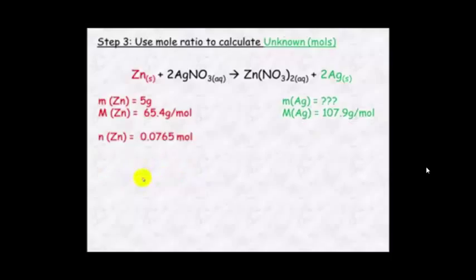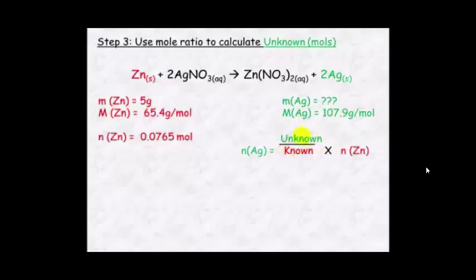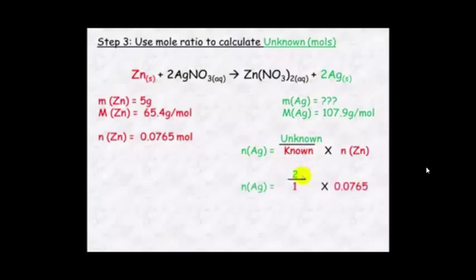Now that we have the number of moles of zinc, we use the mole ratio — it's a 1 to 2 ratio — to work out how many moles of silver there will be. The best way is to use unknown over known. So the number of moles of silver equals (2/1) × 0.0765, which equals 0.153 mol.